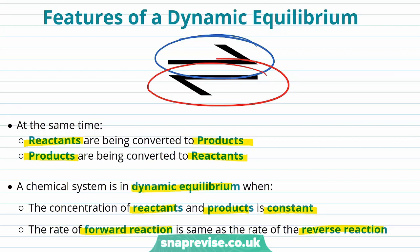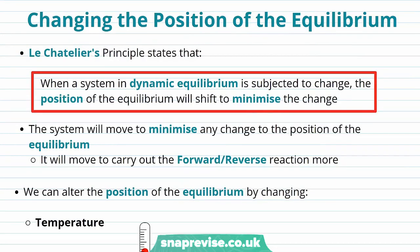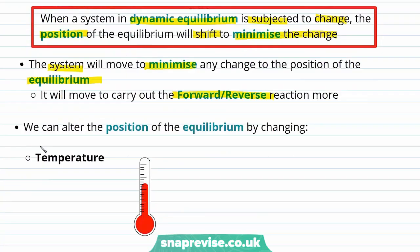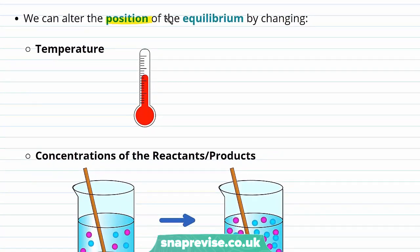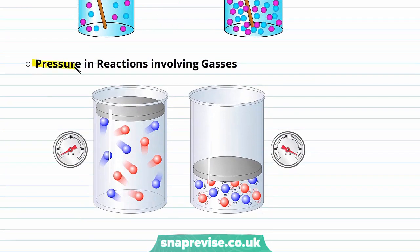Now let's look at the position of equilibrium. The position of equilibrium is the extent of the reaction — it can lie towards the reactants or the products. Le Chatelier's principle states that when a system in dynamic equilibrium is subjected to change, the position of equilibrium will shift to minimise the change. We can alter the position of equilibrium by changing temperature, the concentration of reactants or products, or pressure — but only in reactions which involve gases.